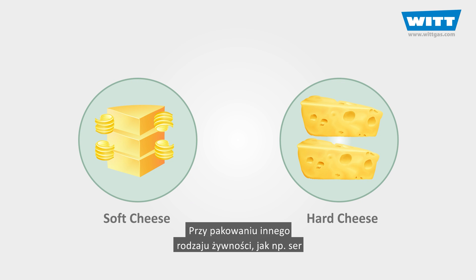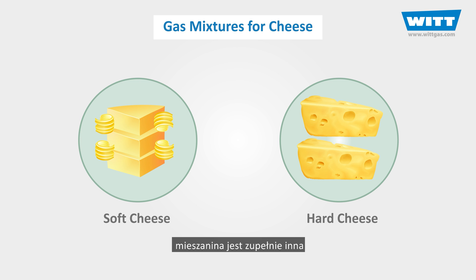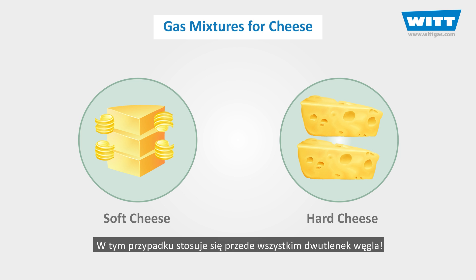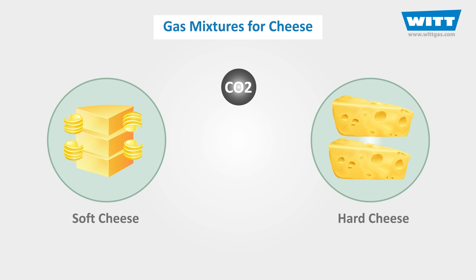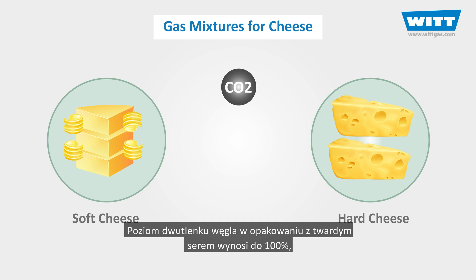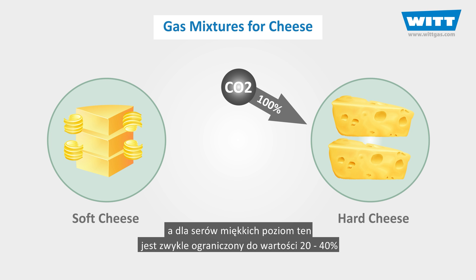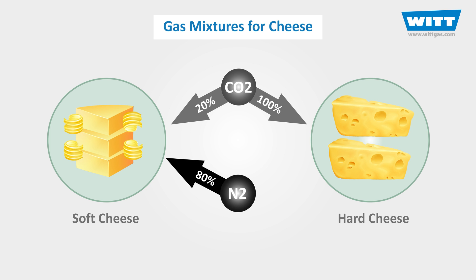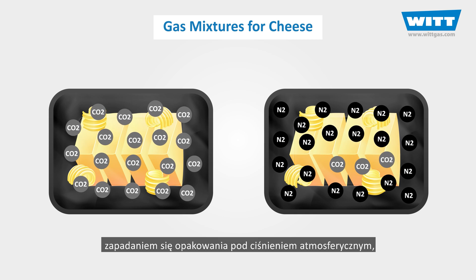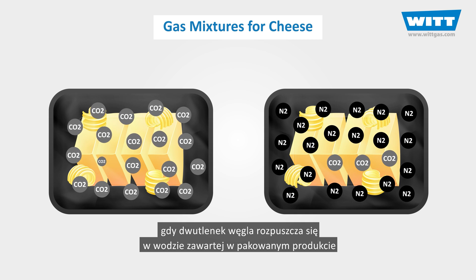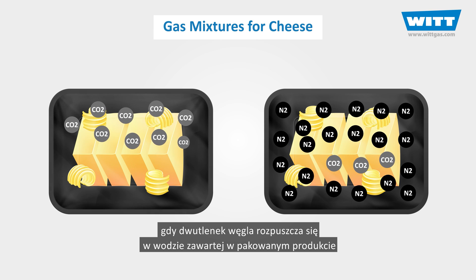In the packaging of some other types of foods such as cheese, the mixture is completely different. Carbon dioxide is used first and foremost. The carbon dioxide level in hard cheese packages is up to 100%, and for soft cheeses the level is usually restricted to 20–40%. The reason for this is to prevent the package from collapsing under atmospheric pressure as the carbon dioxide dissolves into the water content.